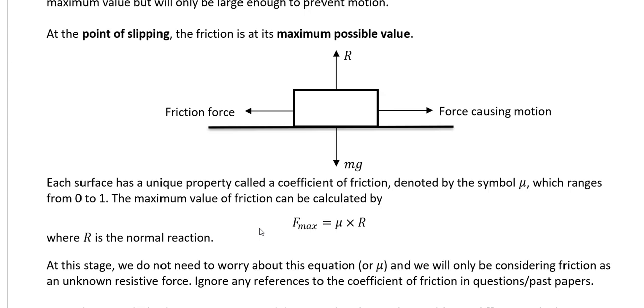Now μ is dependent on the two surfaces which are involved - the surface that the object is sitting on and the surface of the object. So if you had a block of wood on ice there would be a certain coefficient of friction, but if you changed that to a brick on ice there would be a different coefficient of friction.